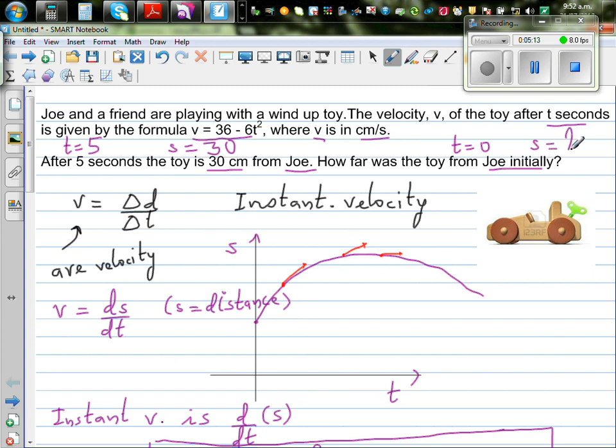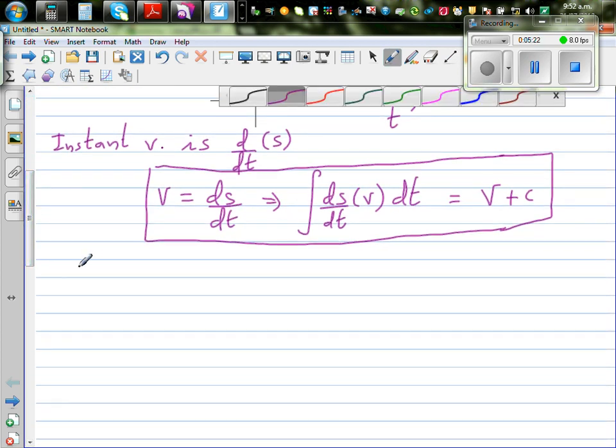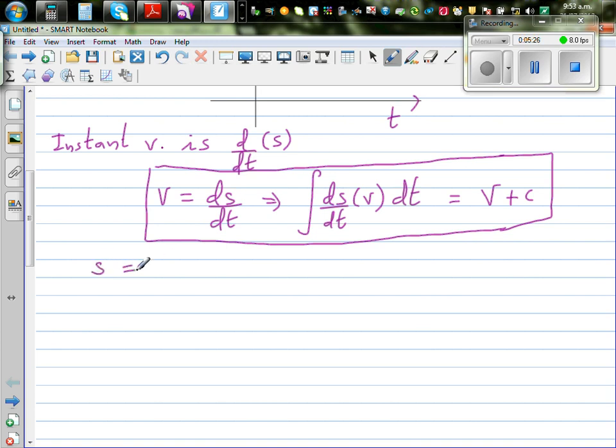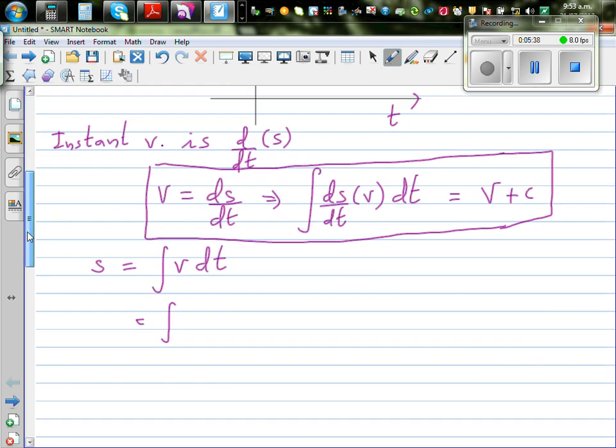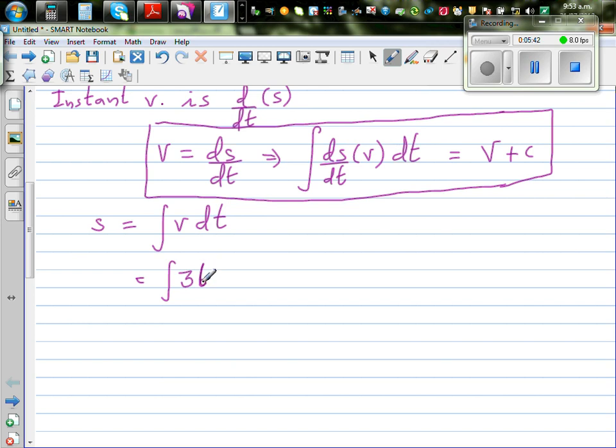As you saw, when you integrate the velocity function, you get your distance. So I can write S. The S would be integration of V dt. So this is integration of your V. Your velocity is 36 minus 6t squared dt. Integrating with respect to time, the same rule, add the power by 1. So 36t to the power 1, over 1, minus 6t cubed over 3, plus C.